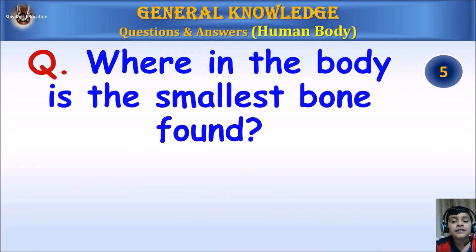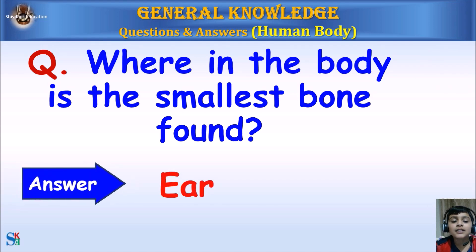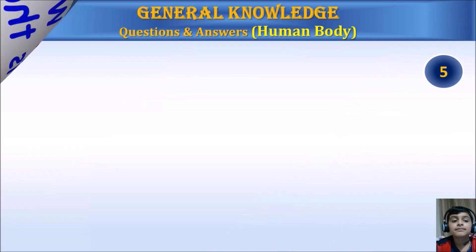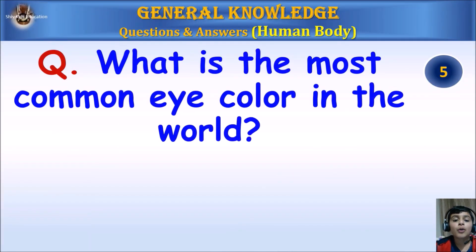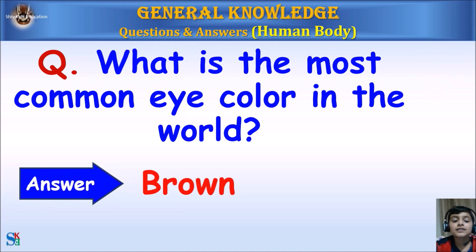Where in the body is the smallest bone found? Answer: The ear. What is the most common eye color in the world? Answer: Brown.